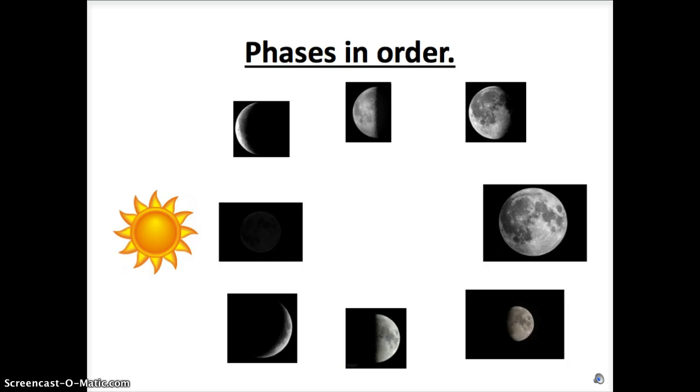These are the phases in order. We start with the new moon, and in a counter-clockwise rotation, we have the waxing crescent, the first quarter, the waxing gibbous, the full moon, the waning gibbous, the last quarter moon, also known as the third quarter moon, the waning crescent, and then the cycle repeats with the new moon starting again.